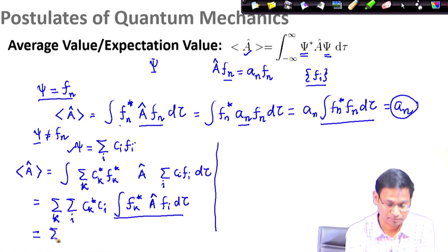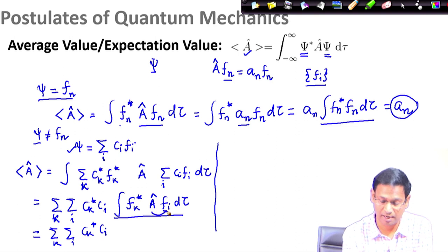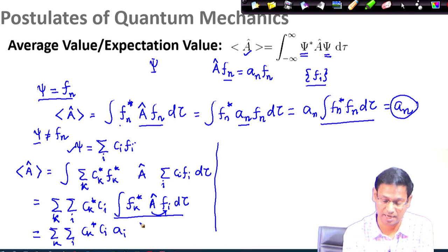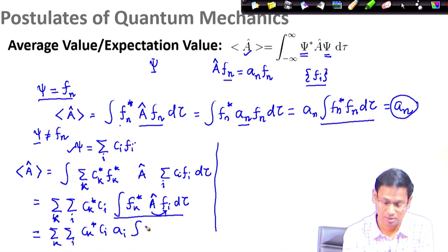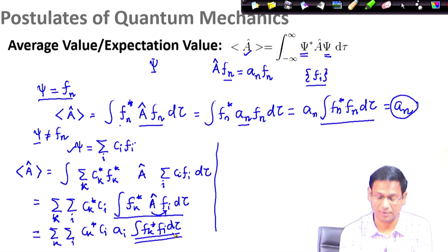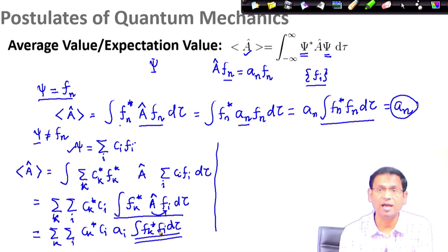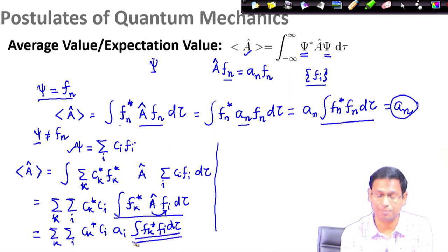Looking at this term, operator A acting on function f_i — since f_i is an eigenfunction of operator A — gives eigenvalue a_i multiplied by f_i. So a_i is a constant I bring outside, and I am left with the integral of f_k star f_i d-tau. This is an overlap integral between two eigenfunctions f_i and f_k of the same Hermitian operator A. Since they are orthonormal, I replace this integral with a Kronecker delta.